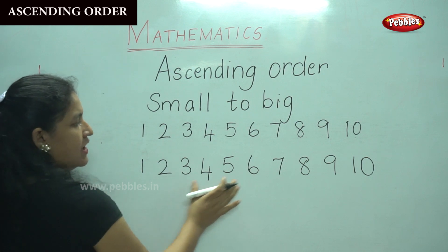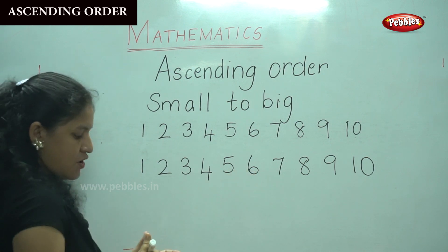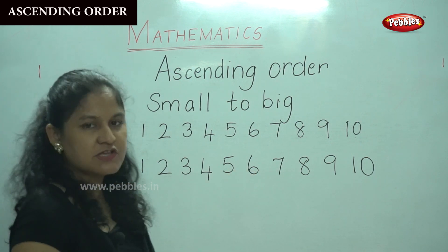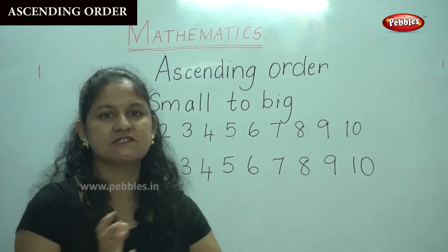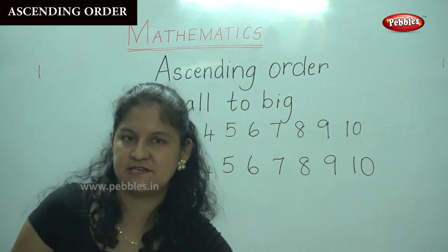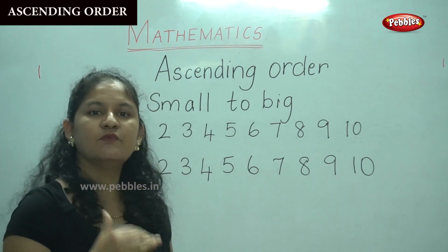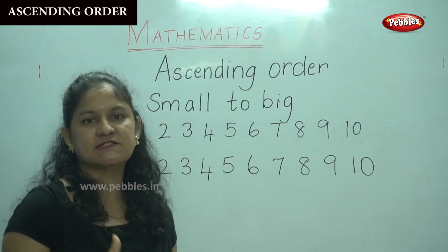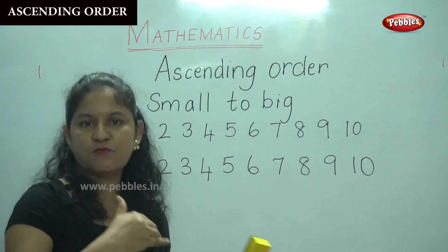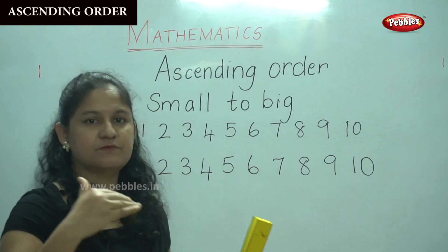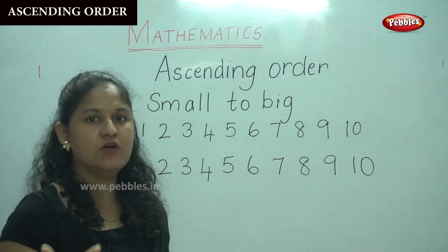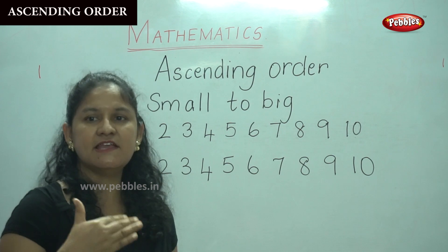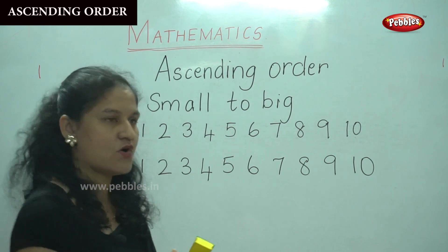So this is called ascending order. Now I am going to jumble up these numbers and we are going to place them from the smallest number to the biggest number — that is the ascending order.